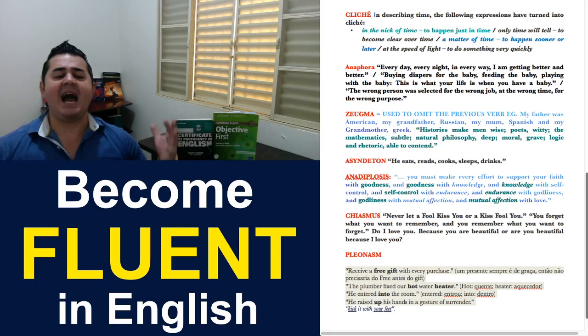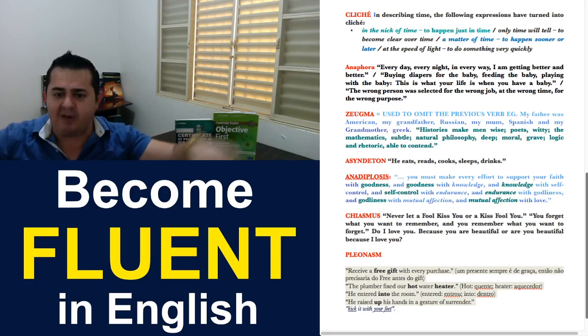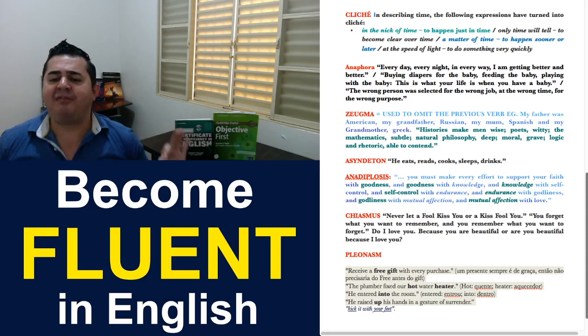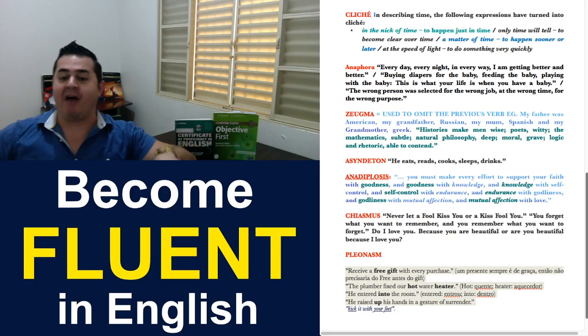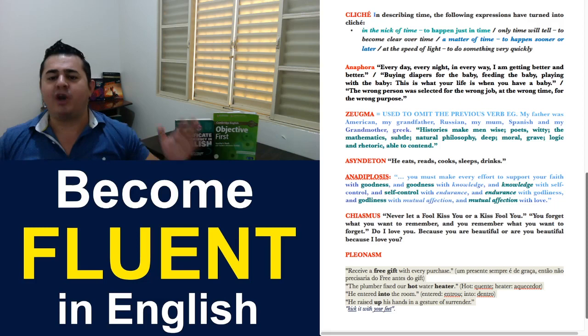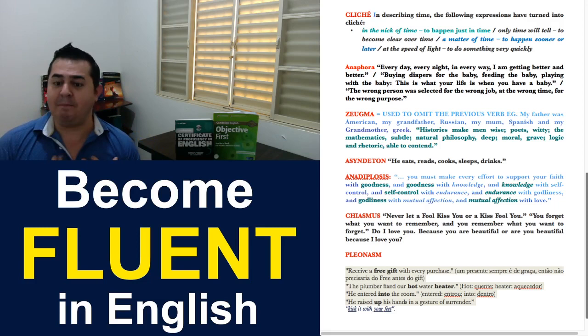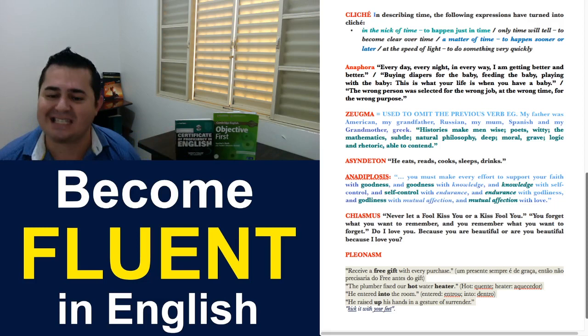The penultimate word of the day is chiasmus. Basically, it happens when two clauses balance against each other by the reversal of their structures. So, by the inverse of their structures. Let's see the example: Never let a fool kiss you or a kiss fool you. So, I inverted a fool kissing by a kiss fool you. That's the reversal of the previous sentence. Next example: You forget what you want to remember. And you'll remember what you want to forget. It's a classic. Another example: Do I love you because you're beautiful? Or are you beautiful because I love you? So, I'm using the reversal of the previous sentence. And when I do that in English, it's called chiasmus.